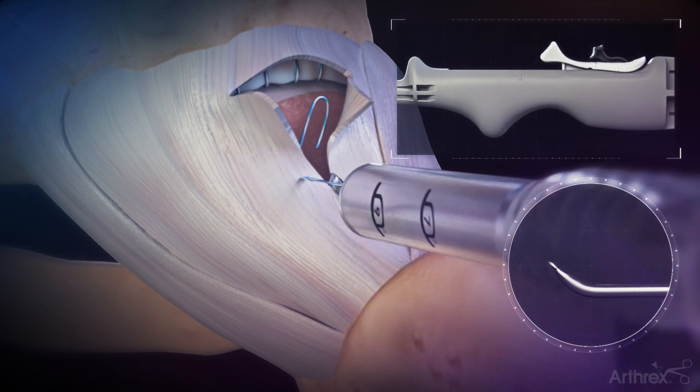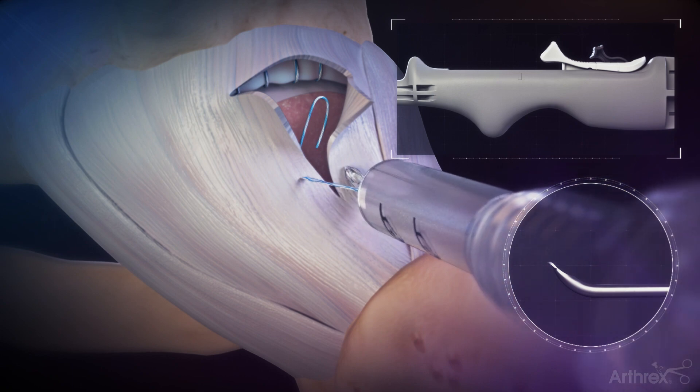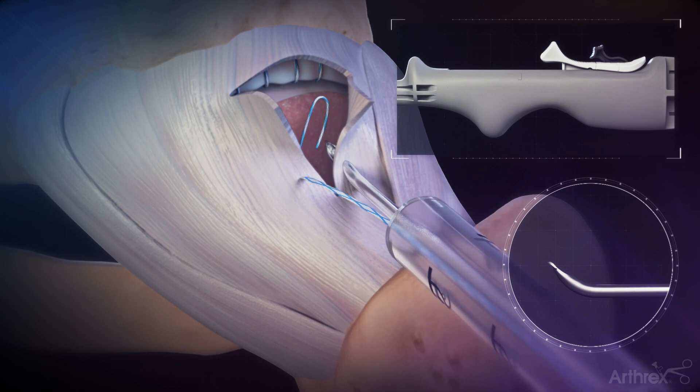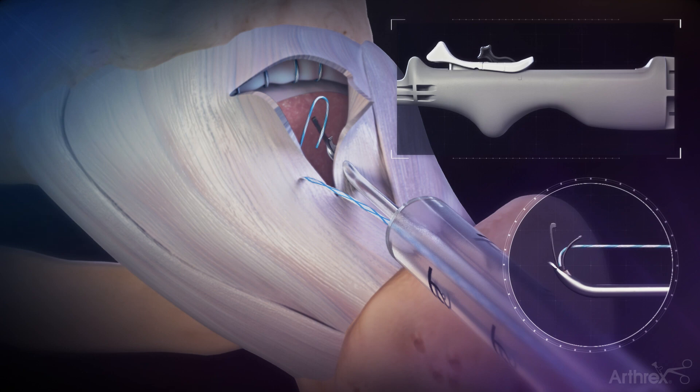Remove the needle from the capsular leaflet. With the device still in the pericapsular space, push it through the distal lateral capsular leaflet to retrieve the passed suture. Push the white sliding actuator down and forward so the nitinol jaws are located next to the suture. Once the suture is loaded into the nitinol jaws, pull the black switch backward to capture the suture in the PEEK tubing.